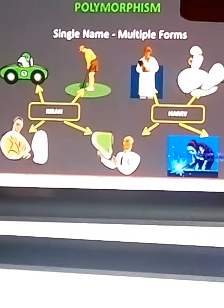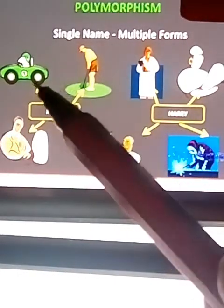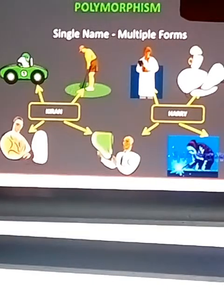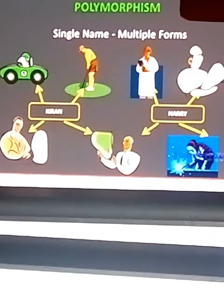The next feature is polymorphism. Poly means many, so polymorphism means single name, multiple forms. For example, a person named Kiran can be both a driver and a player — the same name refers to different roles. This is similar to polymorphism: the same name exists in different forms and different contexts.